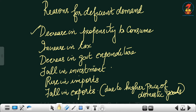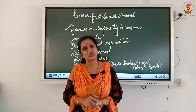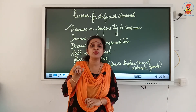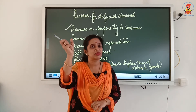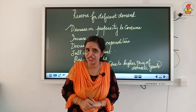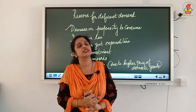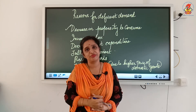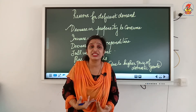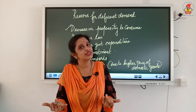The reasons for deficient demand: point one is decrease in the propensity to consume. When income increases, consumption also increases. But when the propensity to consume is less — when the increase in consumption is less — there is deficient demand. Because when propensity to consume is less, people's spending is less, total expenditure is less, and therefore aggregate demand is less than aggregate supply.